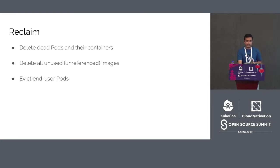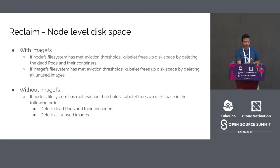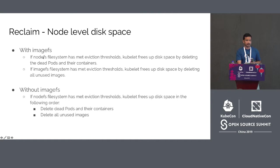Now let's look at how Kubelet responds when a node is under pressure condition. Kubelet will try to reclaim resources in the following order: first, delete dead pods and their containers; next, delete all images which do not have a running or finished container; and as a final resort, rank pods based on priority and evict them to reclaim resources. Regarding disk pressure, with imageFS thresholds set: if nodeFS thresholds are met, Kubelet deletes dead pods and containers to free disk space; if imageFS thresholds are met, Kubelet deletes unused images. Without imageFS set, if nodeFS thresholds are met, Kubelet deletes dead pods and containers followed by unused images.